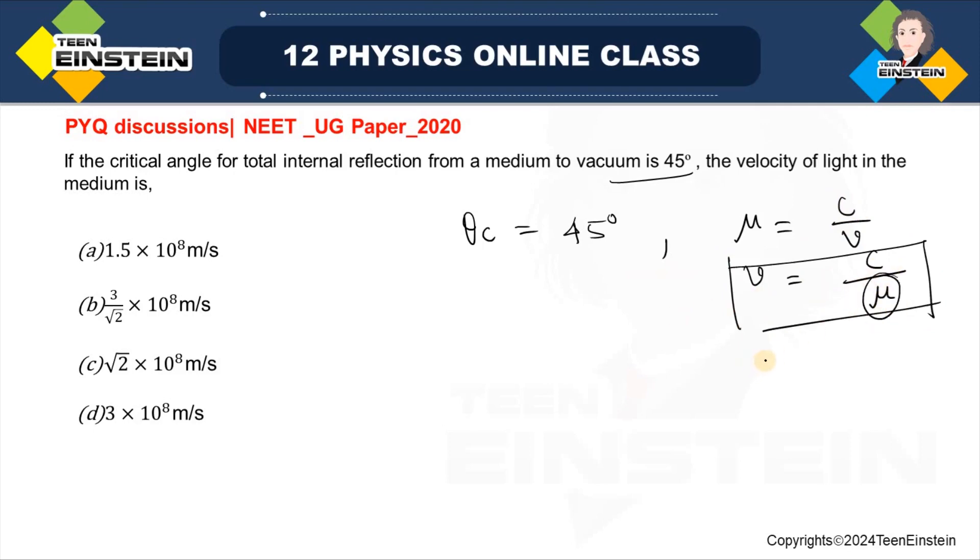The main thing is to calculate the refractive index of the medium from the given information. We know sin theta C, sin theta C is equal to 1 over mu, right? 1 over mu.